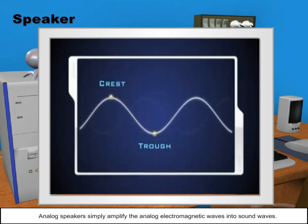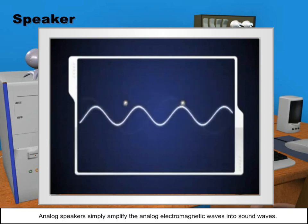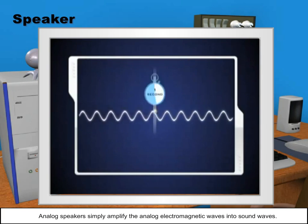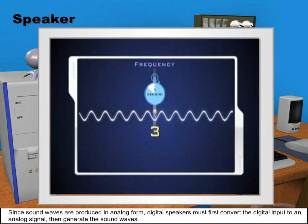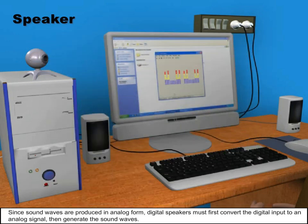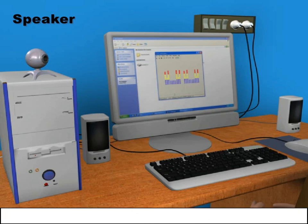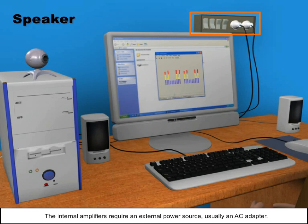Analog speakers simply amplify the analog electromagnetic waves into sound waves. Since sound waves are produced in analog form, digital speakers must first convert the digital input to an analog signal, then generate the sound waves. The internal amplifiers require an external power source, usually an AC adapter.